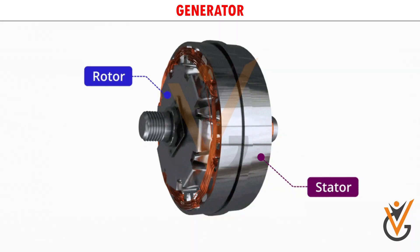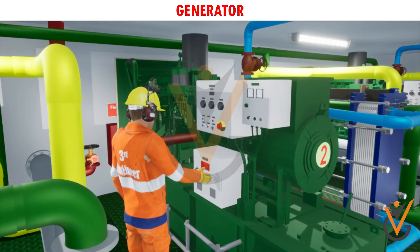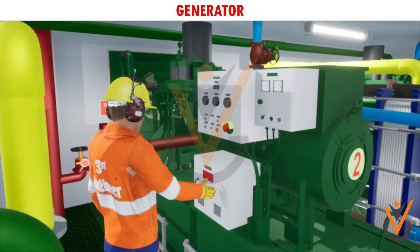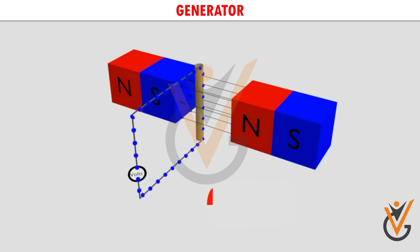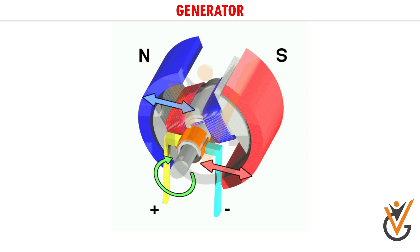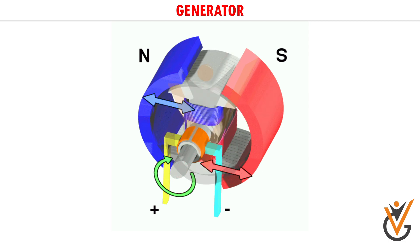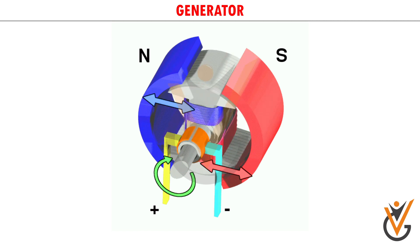As shown, the rotor is located between the stator. The alternator is connected to an auxiliary engine. Electrogenerators work on the principle of electromagnetic induction. A conductor coil, or a copper coil tightly wound onto a metal core, is rotated rapidly between the poles of a horseshoe-type magnet.